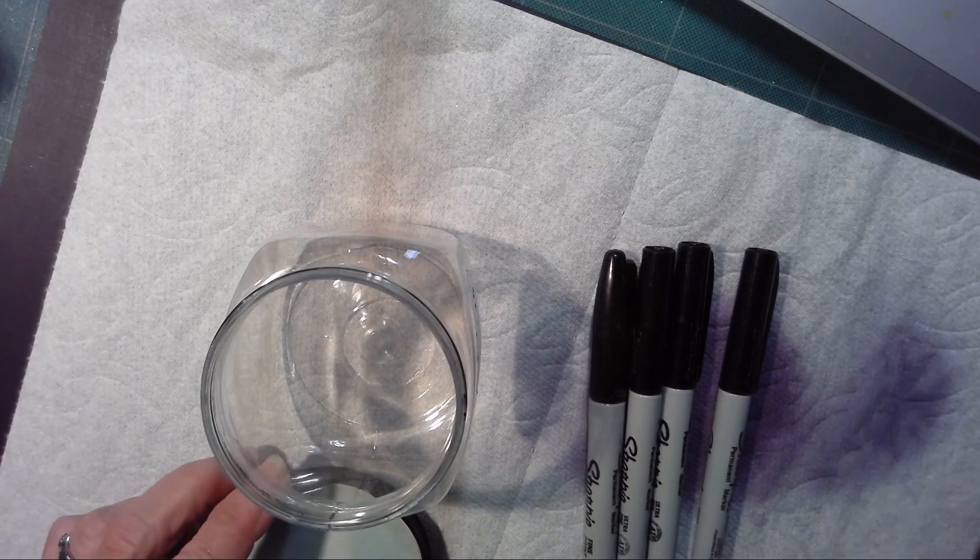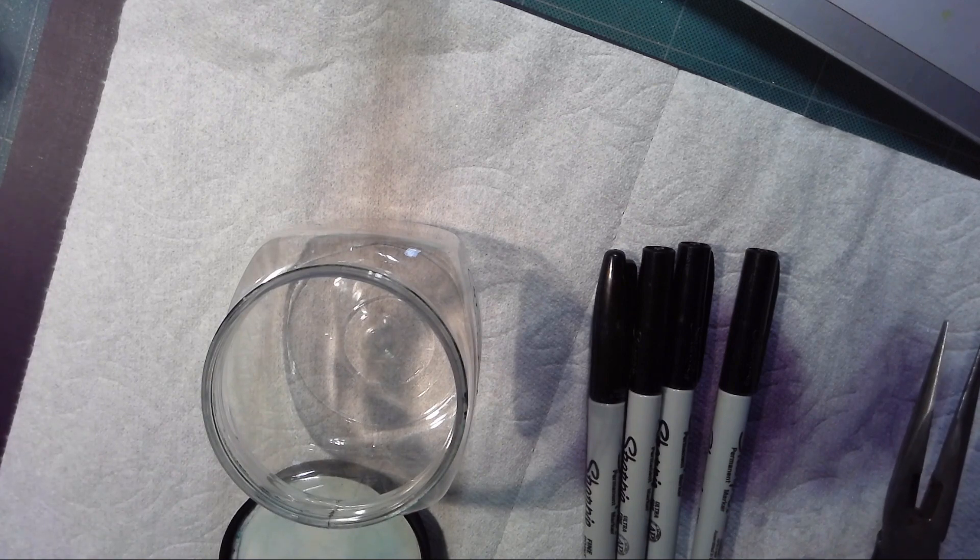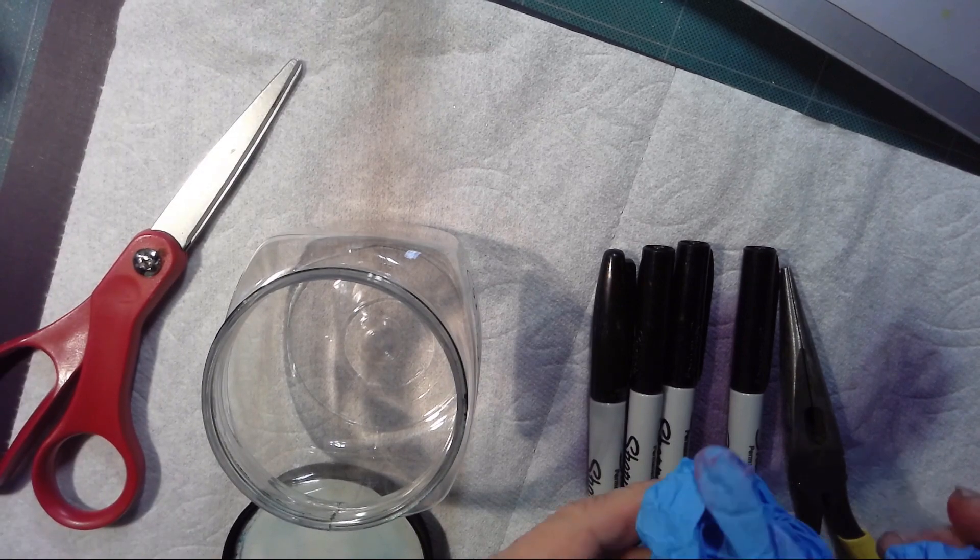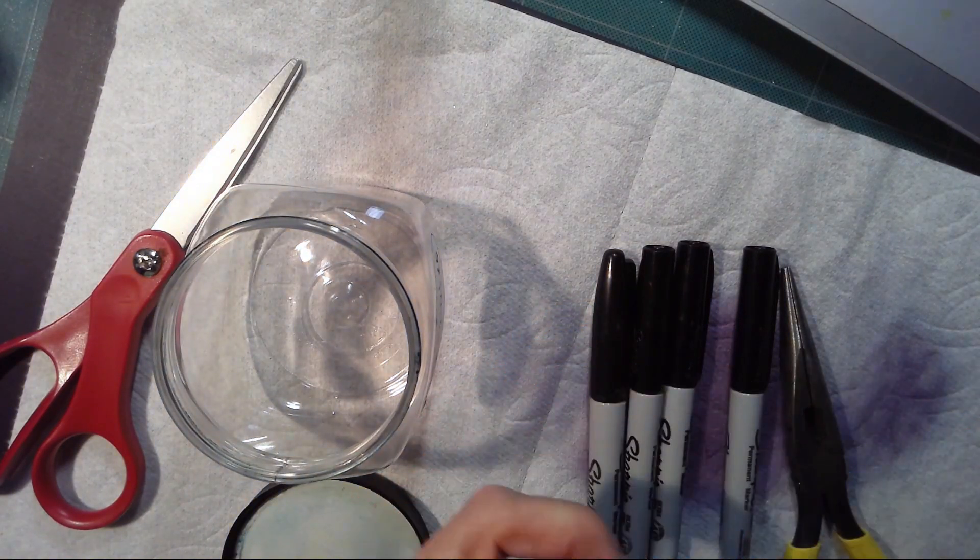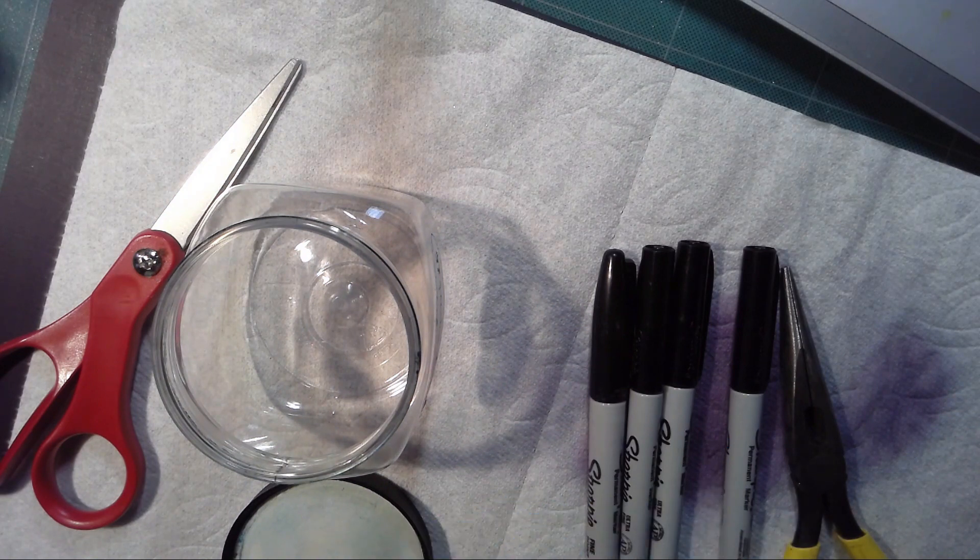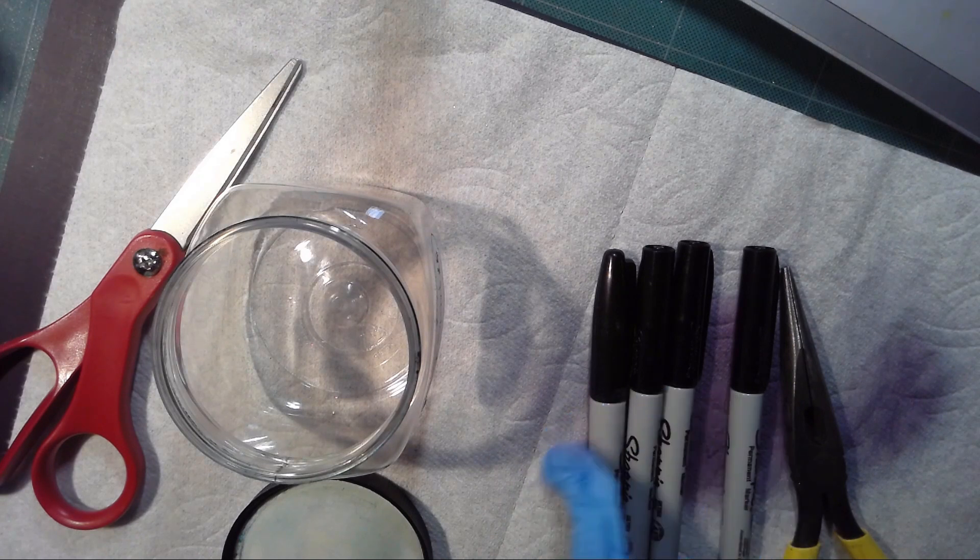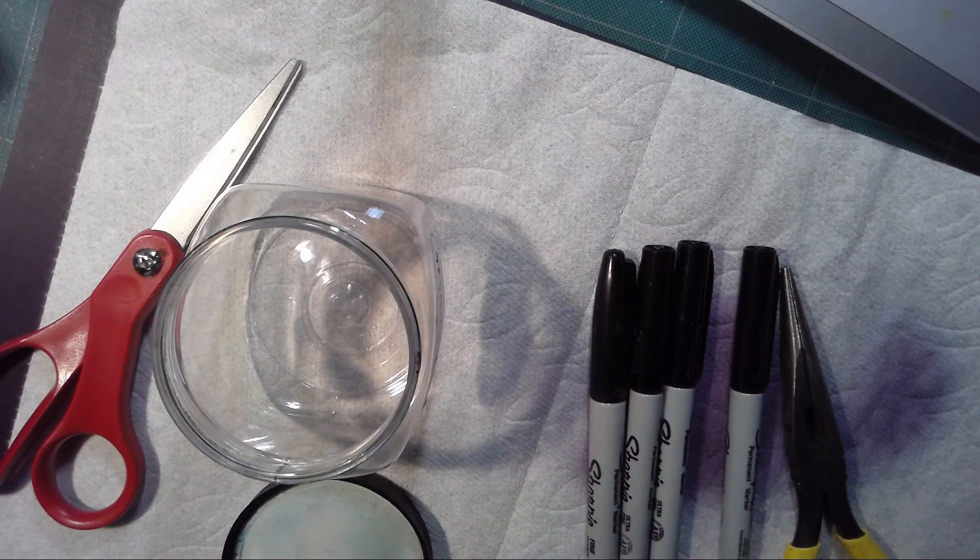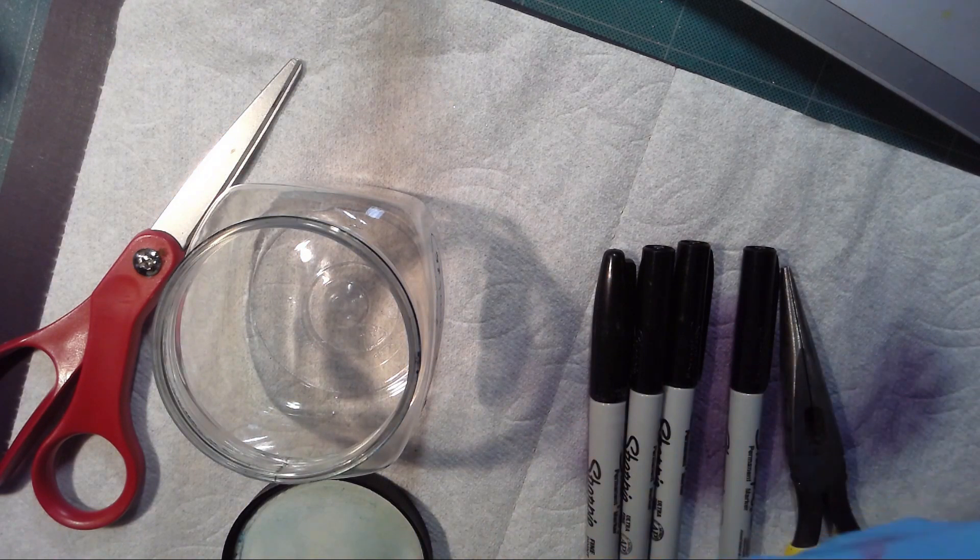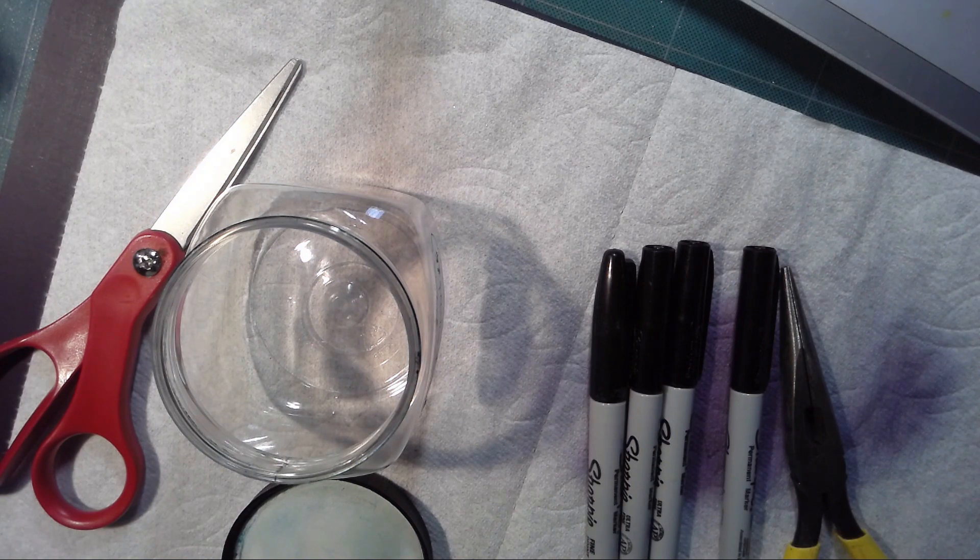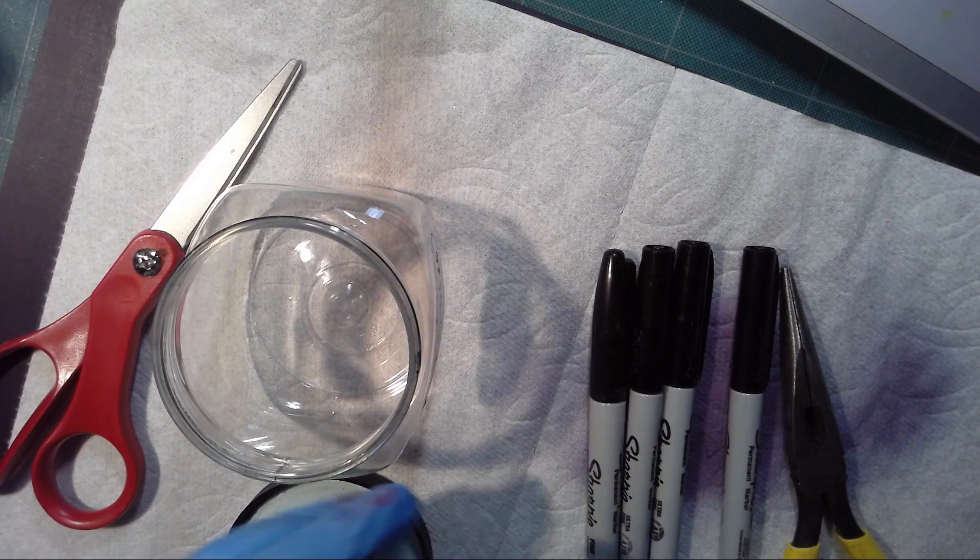I'm going to get my pliers and we're going to get started. Here are my pliers, a nice sturdy pair of needle nose, and then I need a pair of scissors because I'm going to cut. I'm going to use some rubber gloves to protect my hands because I really don't want all of this all over my hands.